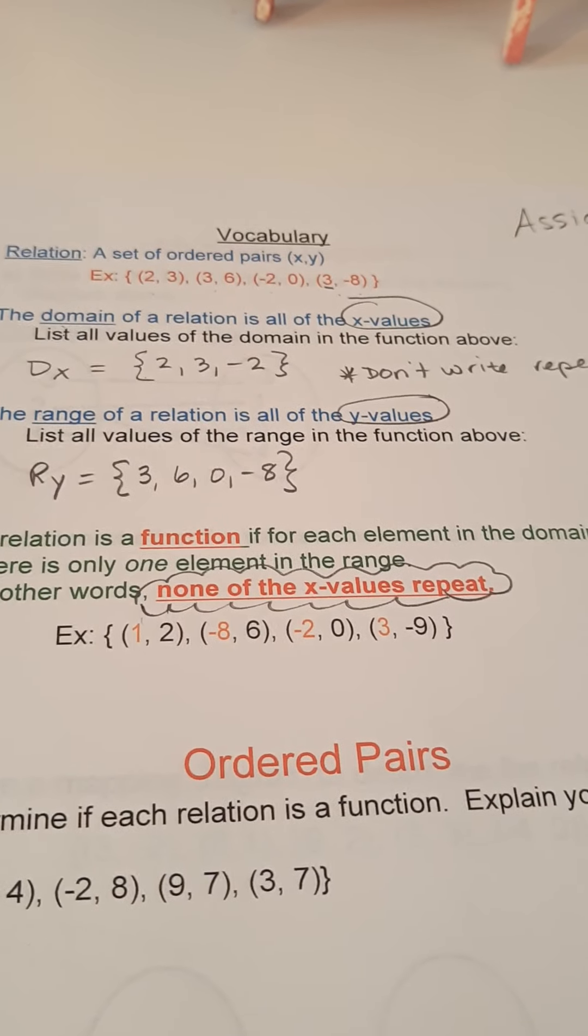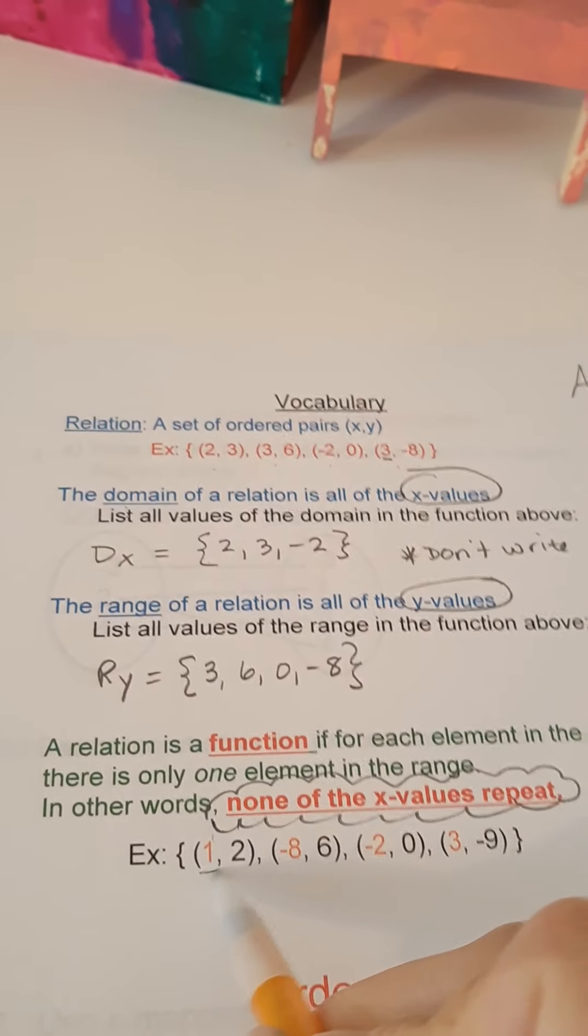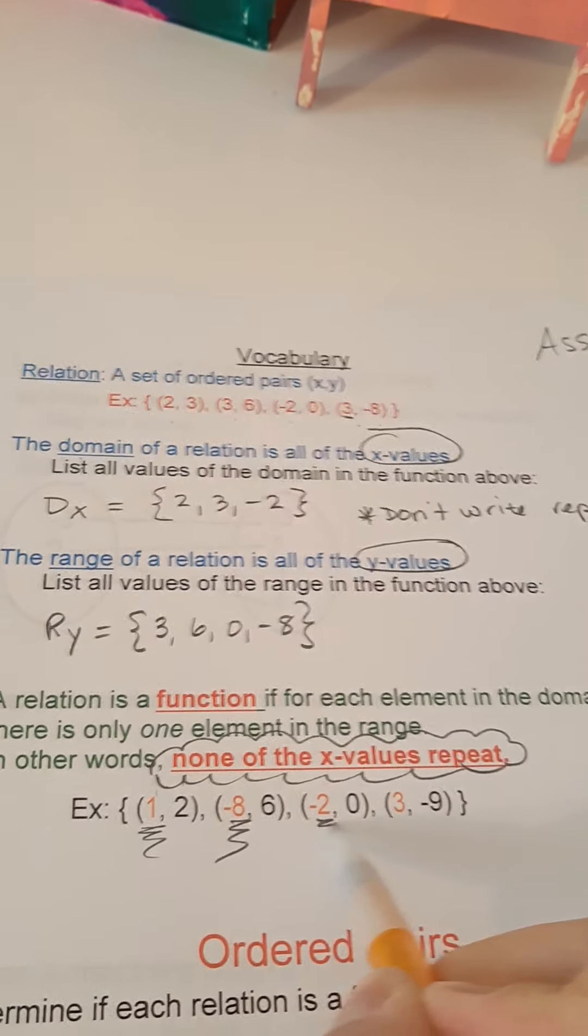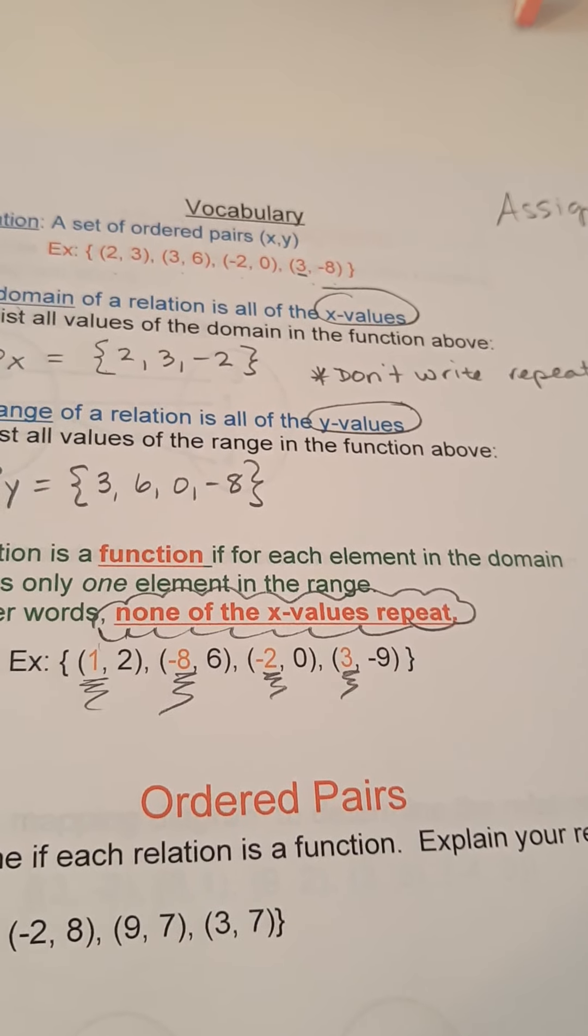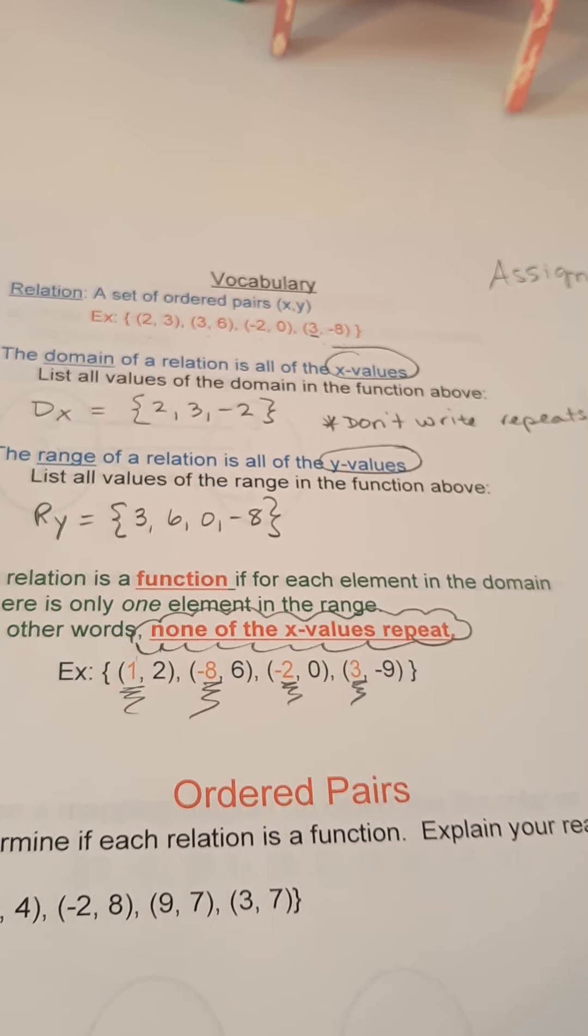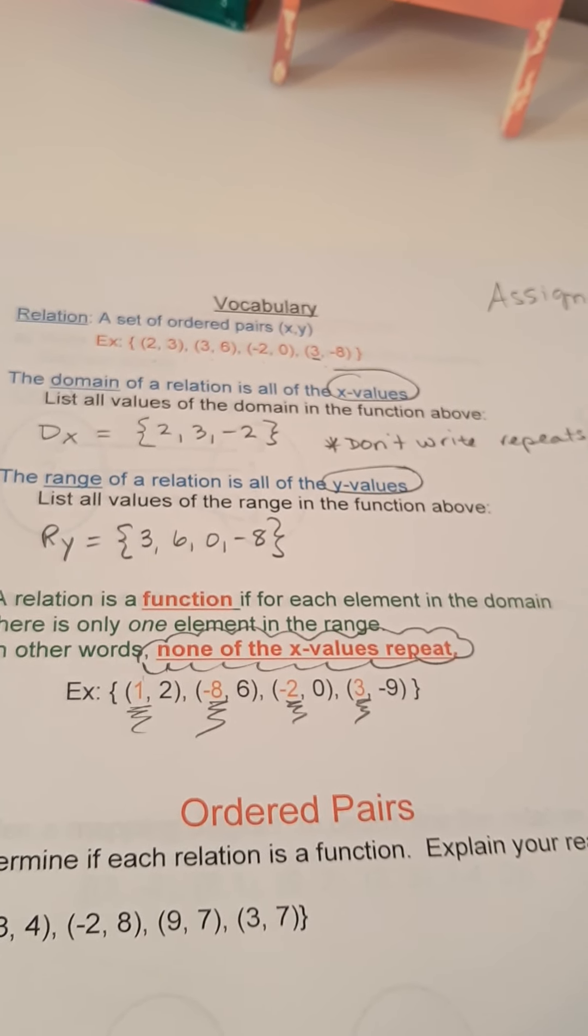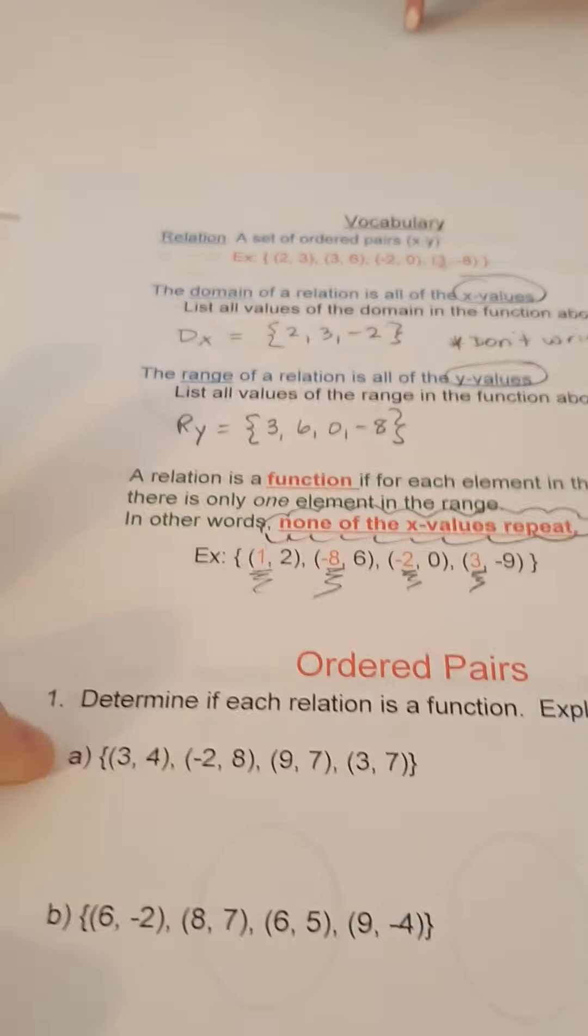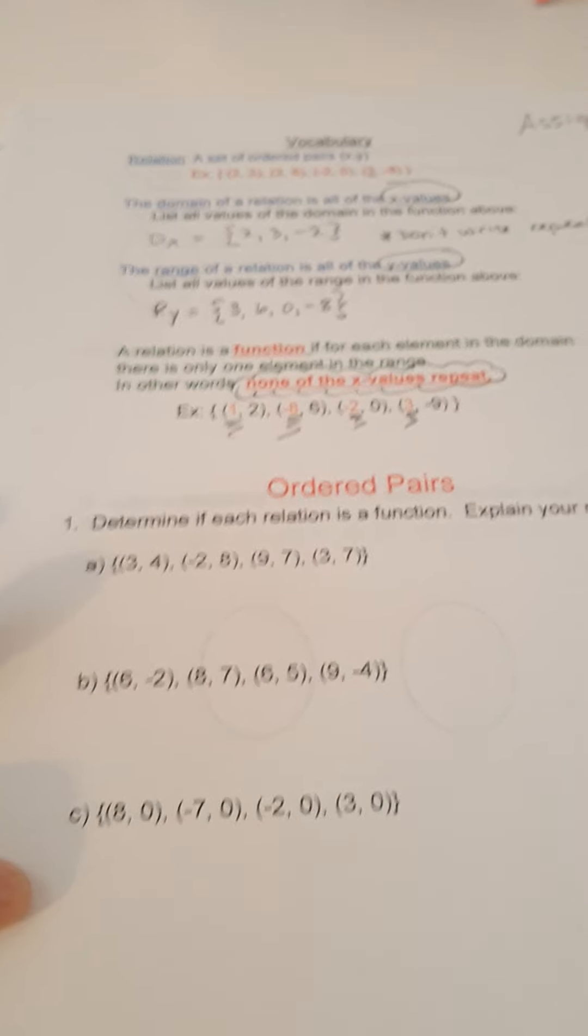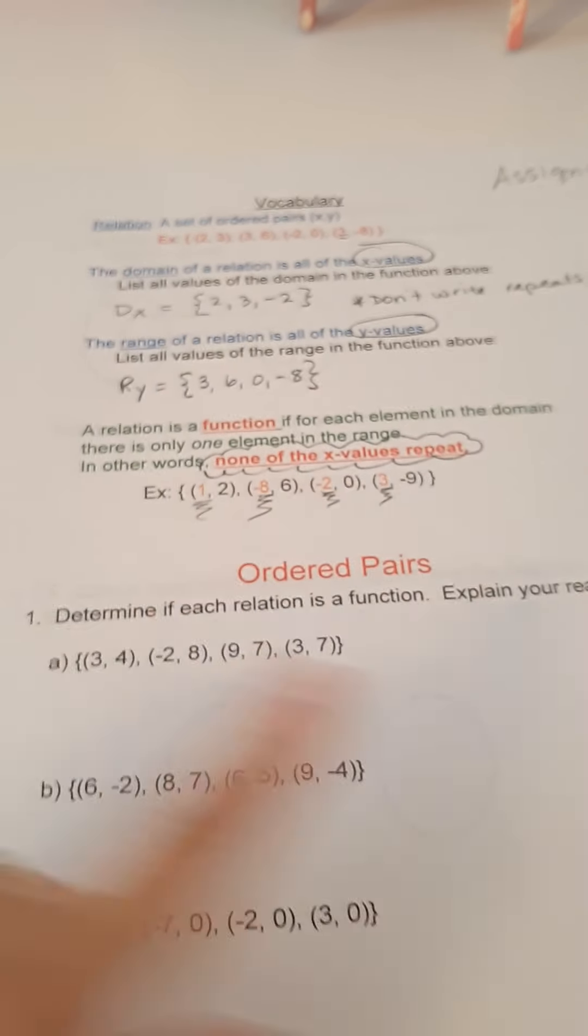So this is an example of a function. The x's are the only ones that matter. Check it out. None of them repeat. Each element in the domain only has one element in the range. So let's determine if each ordered pair, all these relations, a, b, and c, are functions. Explain your reasoning.